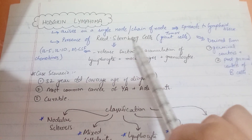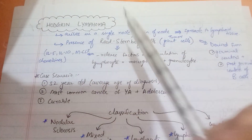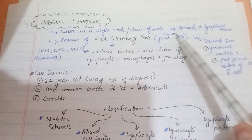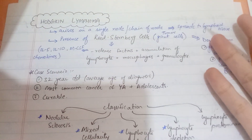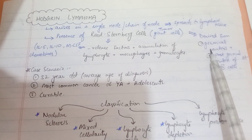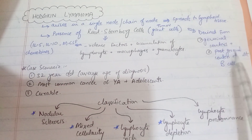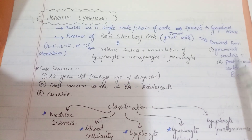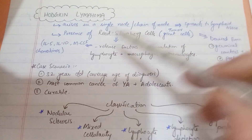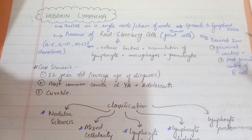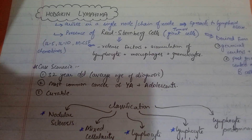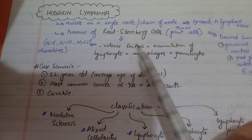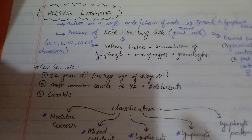The other characteristic thing is the Reed-Sternberg cells. These are particular cells only found in Hodgkin's lymphoma — the hallmark tumor giant cells. They are derived from the germinal centers and post-germinal centers of B cells in the lymph node. They are similar in origin to B cells, but the difference is that they do not express B cell genes and are tumor cells.